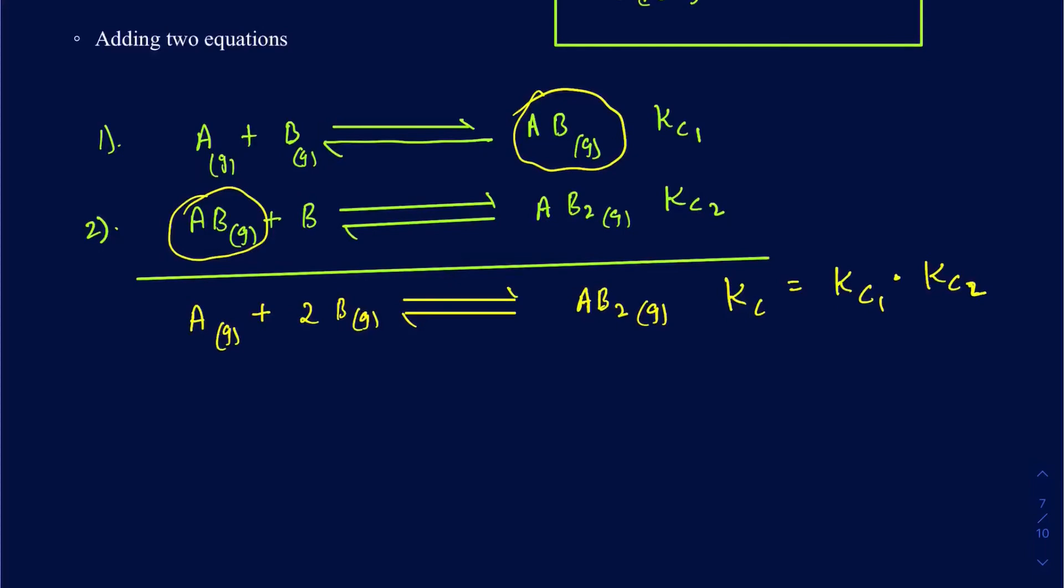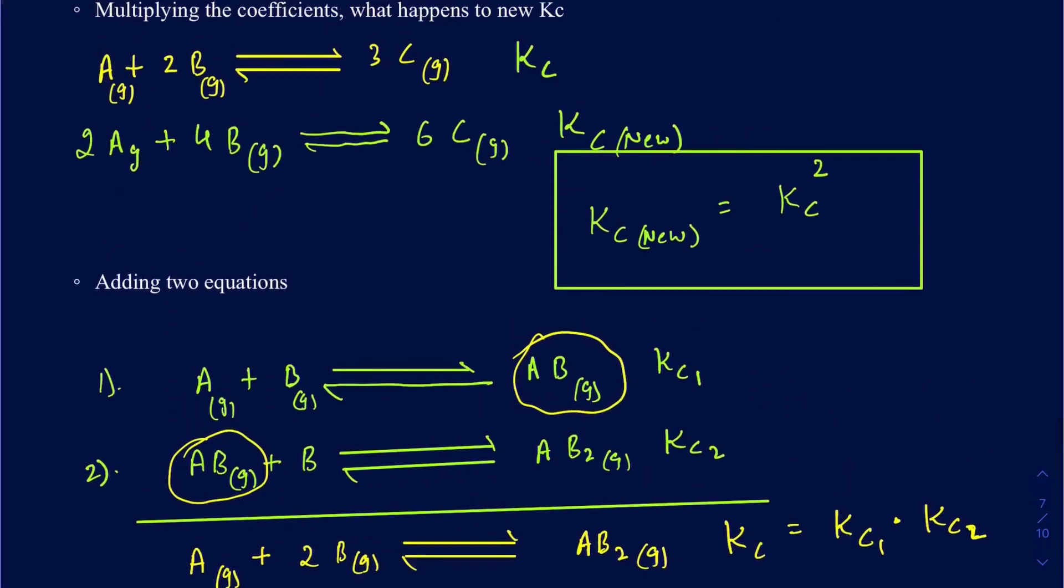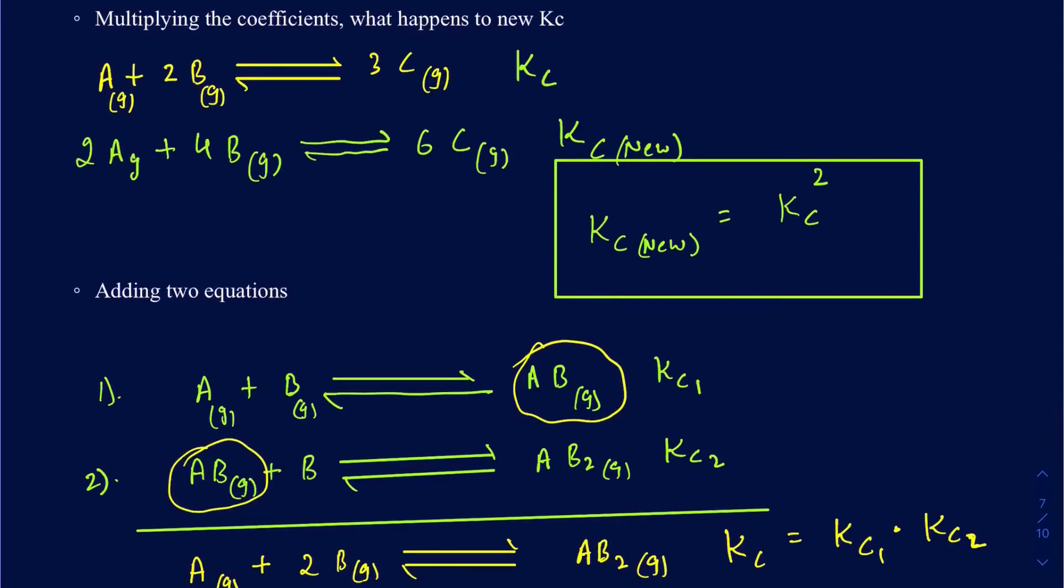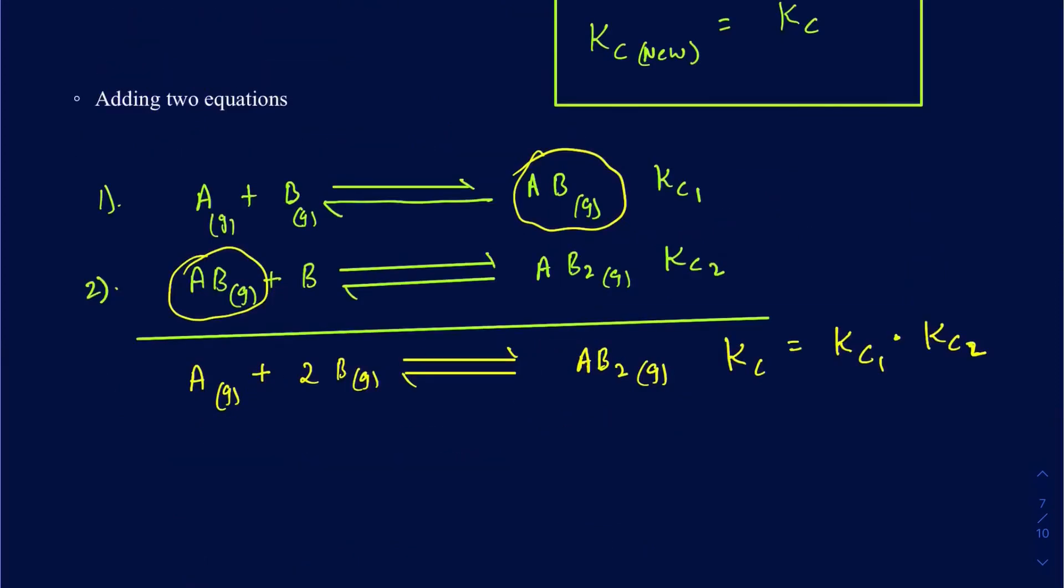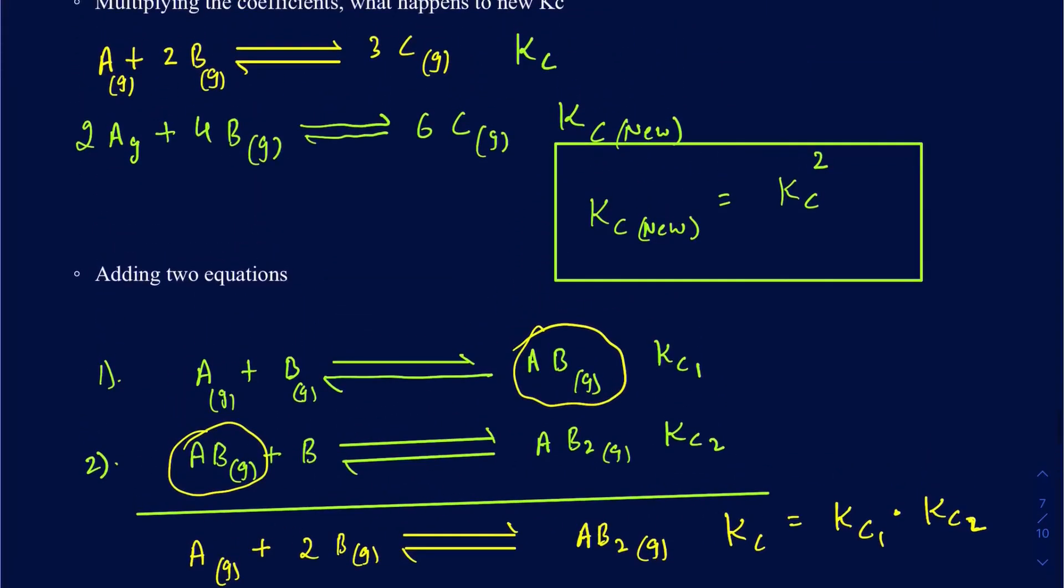So remember, it's going to be different than the delta H's and delta G's. In delta H and delta G, you actually add those up, but in the equilibrium constant cases, you will be multiplying the equilibrium constant values whenever you're going to be adding two equations. So these are the three most common manipulations you're going to be seeing in a given reaction. Hopefully this was helpful. If you have any questions, feel free to leave any comments in the section below.